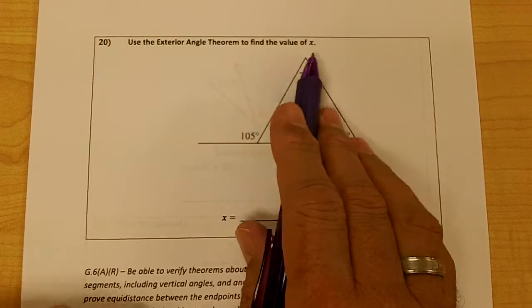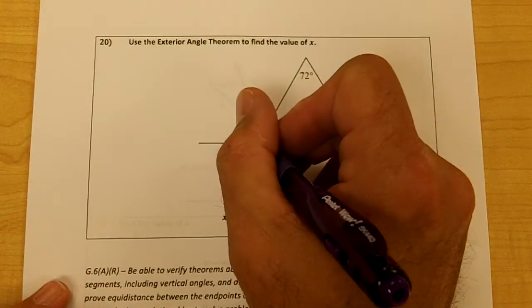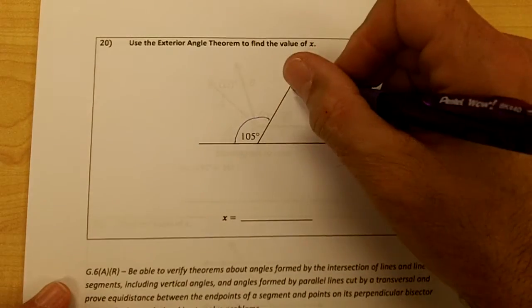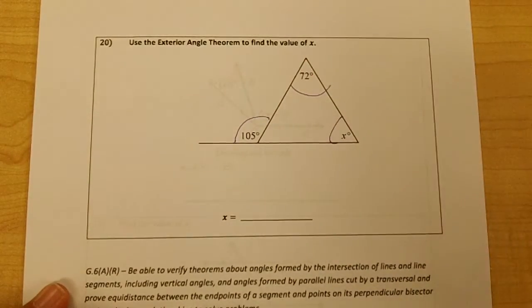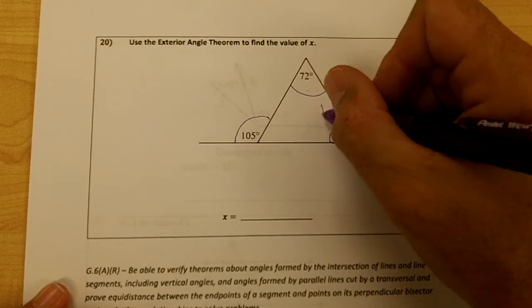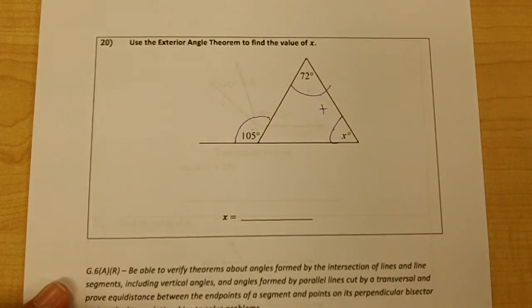Use the exterior angle theorem to find the value of x. Remember, your exterior angle is going to equal the product of your two remote interior. So this angle plus this angle will equal to your exterior angle.